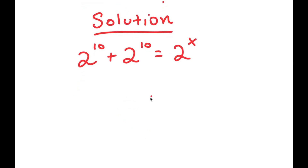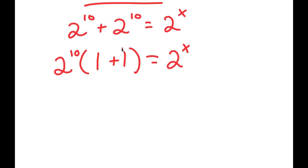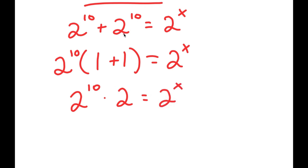For my solution, I'll first factor out 2 to the power of 10 from the left-hand side. Factoring gives 2 to the power of 10 times (1 plus 1), which equals 2 to the power of 10 times 2, equal to 2 to the power of x. A simpler way to see this: since we have two copies of 2 to the power of 10 added together, that's the same as 2 to the power of 10 times 2.